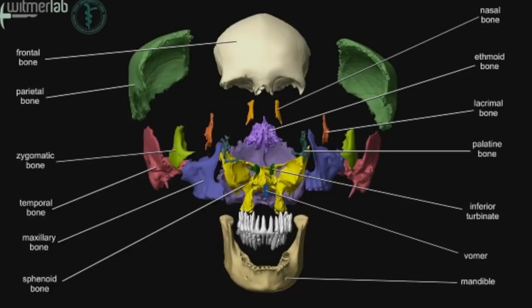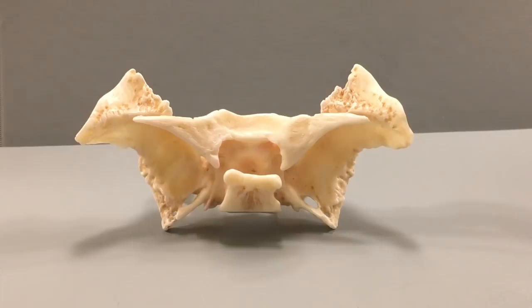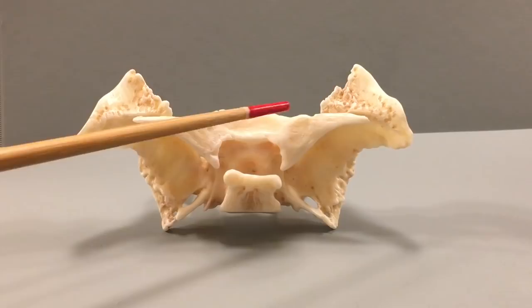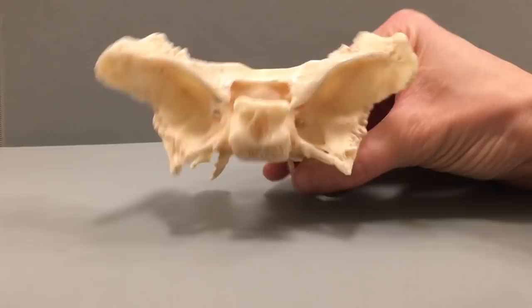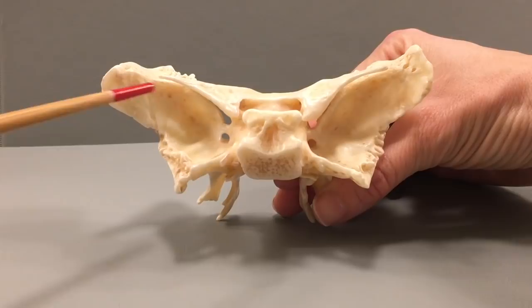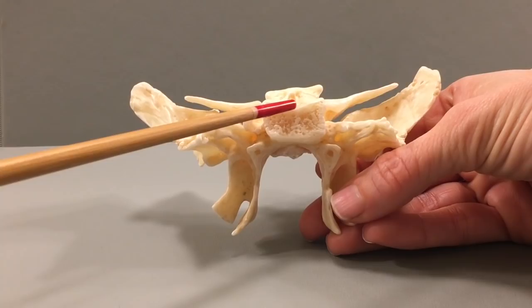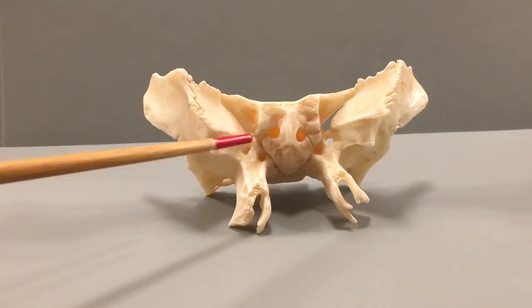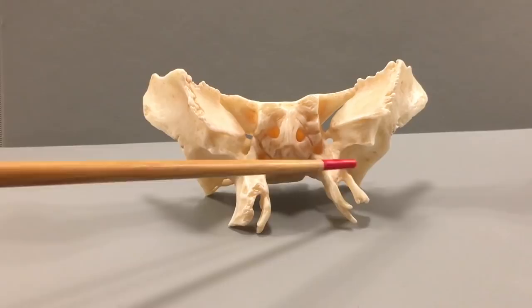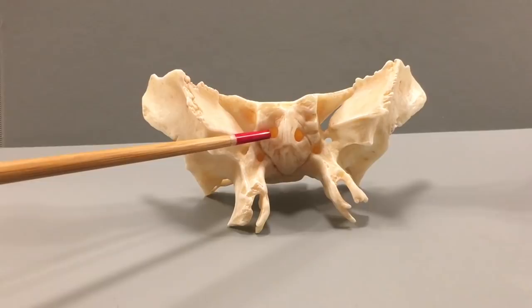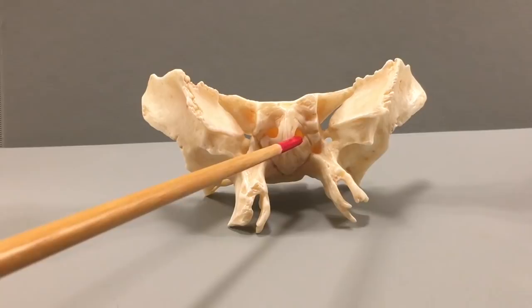The sphenoid bone can be divided into four parts: the body of the sphenoid bone, the lesser wings, the greater wings, and the pterygoid processes. Within the body of the sphenoid bone is a pair of cavities known as the sphenoidal sinuses, which are part of the larger group of four paired paranasal sinuses.